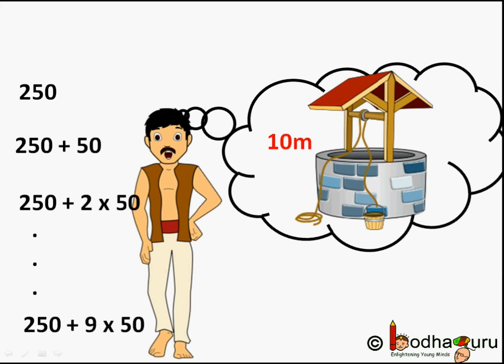If Rajat wants to get a 10-meter deep well, he will have to find the cost of digging for each meter, because that cost is different for each meter. That means he needs to find all 10 terms of the arithmetic progression, and then to find the total cost of digging he will need to sum all the terms. So let us find the formula to sum them up.